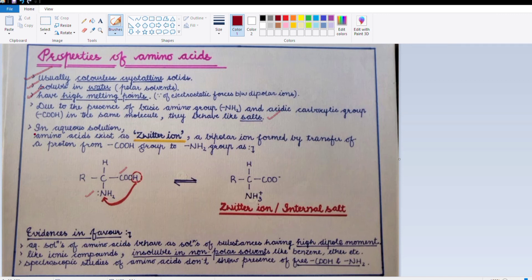The next property of amino acids is that they exist in the form of zwitterion. This is what we were discussing while explaining the high melting points of amino acids. Now, amino acids exist in the form of bipolar ions. What are these bipolar ions and how do they form?